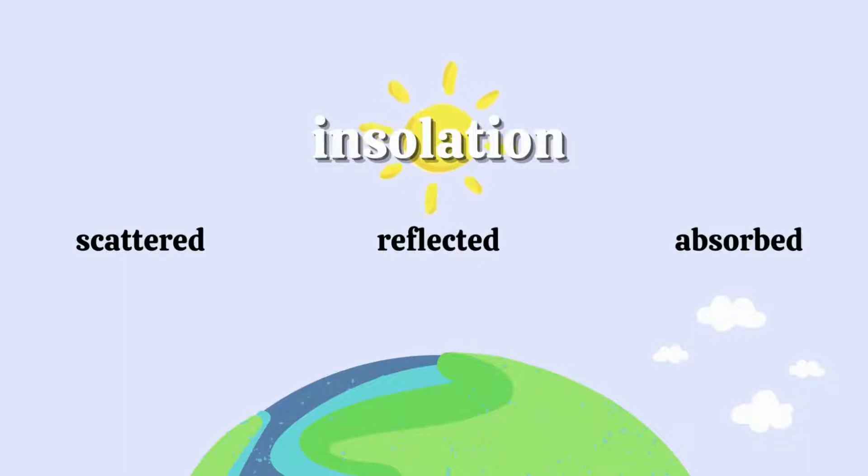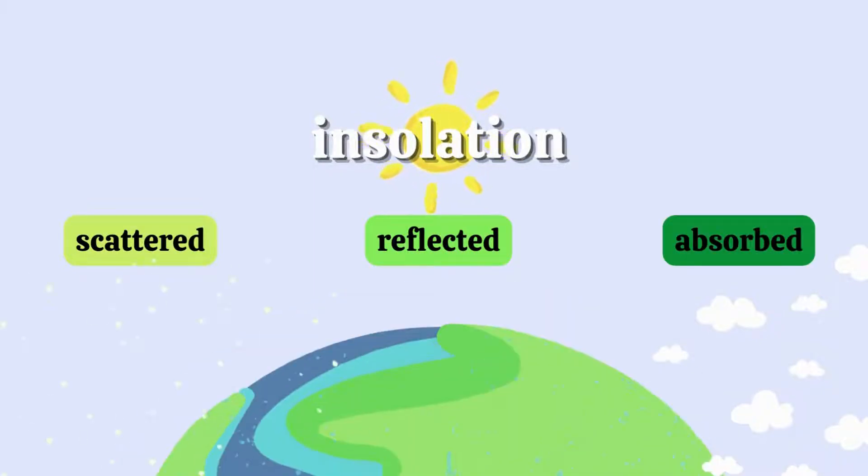Insolation can be scattered and reflected by things like clouds and dust particles in the atmosphere and is absorbed by the land and oceans.